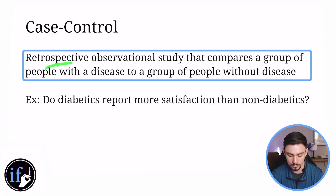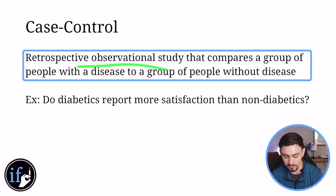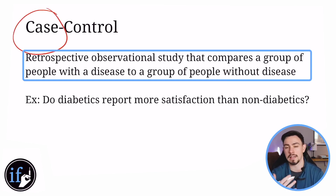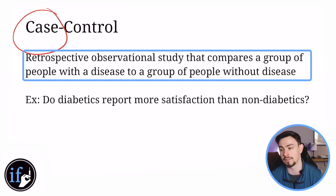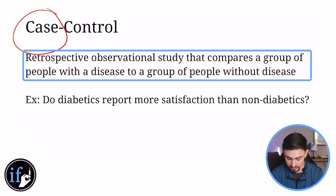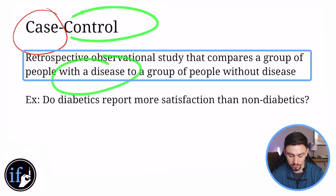Case control is a retrospective study — meaning it's looking in the past — that compares a group of people with a disease to a group of people without. I remember case control by thinking of when surgeons say 'I got a case to go do,' meaning the patient has a disease. So you have a case, which is a group with a disease, and a control, which is a group without the disease.